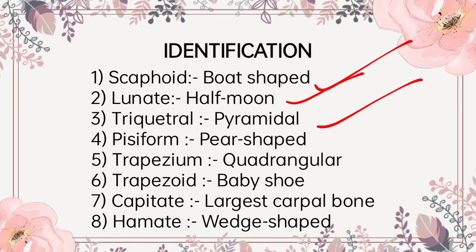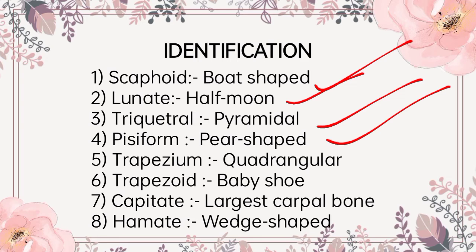The oval-shaped facet is on the distal part of the palmar surface. Pisiform is a pea-shaped bone and has only one oval facet which is on the proximal part of the dorsal surface. Triquetrum has oval facet on the distal part of the palmar surface, and pisiform has oval facet on the proximal part of the dorsal surface.